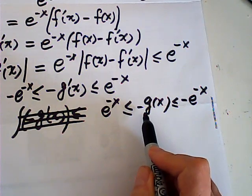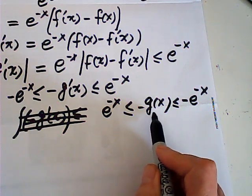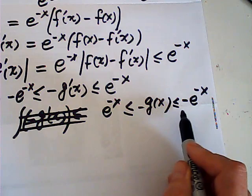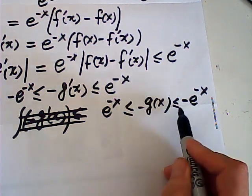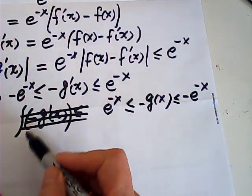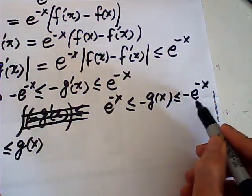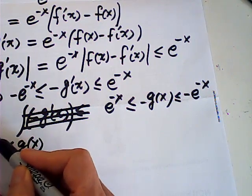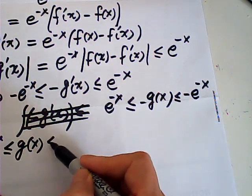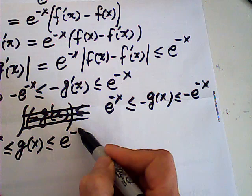Then I delete this negative, which is a negative one. Then I have to invert the inequality sign. So g of x is between negative e to the negative x and e to the negative x.